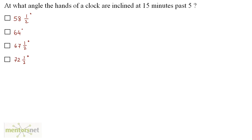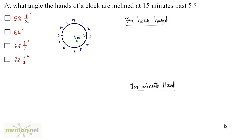At what angle are the hands of a clock inclined at 15 minutes past 5? This will be the position of the hands at 15 minutes past 5. Let us calculate the angle subtended by the hour hand and then the minute hand, and take the difference. First, 15 minutes past 5 can be written as 5 hours plus 15/60. 15 times 4 is 60, and 5 times 4 is 20 plus 1 is 21, so this is 21/4 hours.